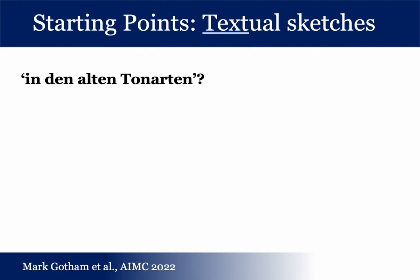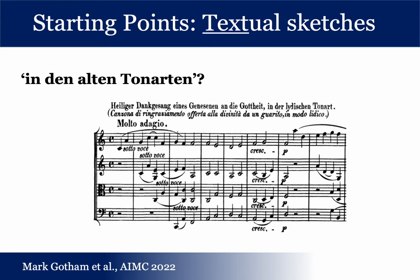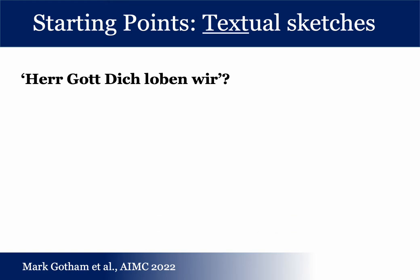He makes specific reference to music in den alten Tonaten — in the old church modes. And this is exciting partly because it doesn't really feature in the Ninth, but is a subject that Beethoven was interested in at the time, explicitly labelling this movement as being in the Lydian mode, for example. More specifically still, Beethoven refers to the Herr Gott dich loben wir, the German form of the Te Deum, which he likely knew the chant for in some form like this.